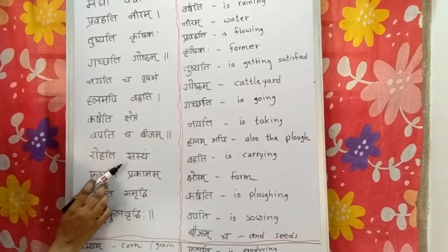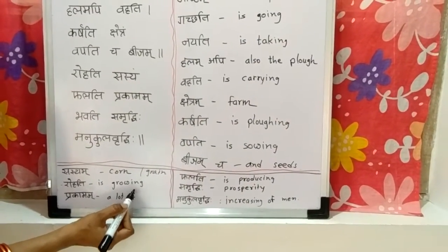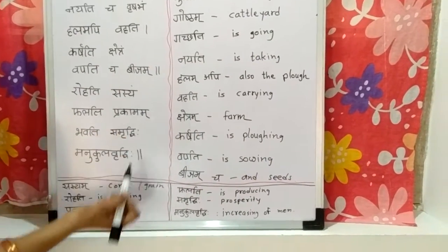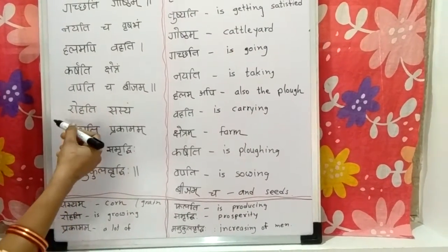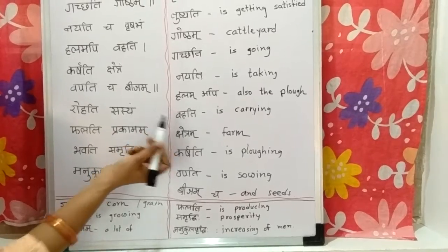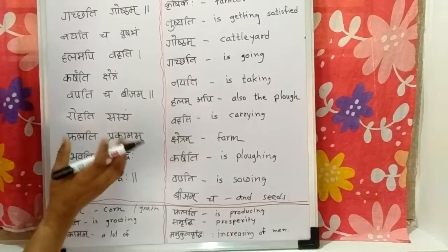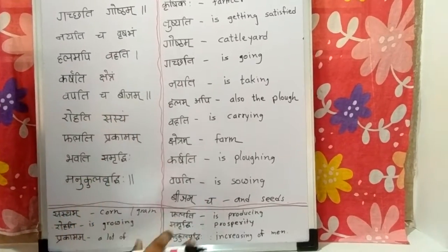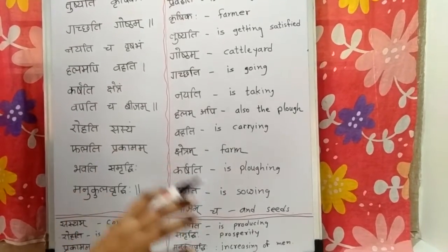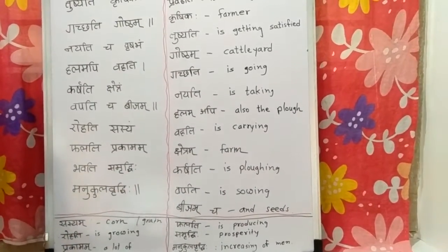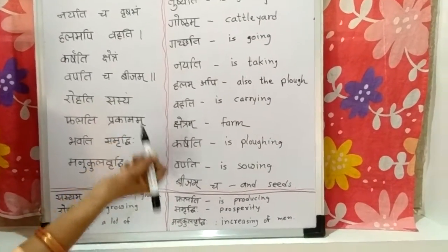Rohati Shashyam — Rohati means is growing, and Shashyam means corn or grain. So Rohati Shashyam means the grain is growing. जब वो बीज खेतों में डालता है, जो farmer होता है, उसके बाद बहुत सारा अनाज उसमें से grow होता है — after the farmer sows seeds, much grain grows.